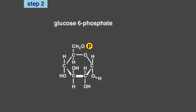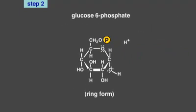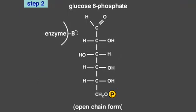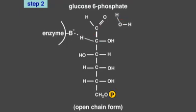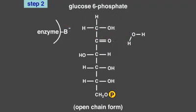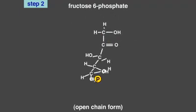In the second step of glycolysis, the enzyme phosphoglucose isomerase catalyzes the opening of the ring form of glucose-6-phosphate to the open chain form. The same enzyme then performs a reversible reaction in which the carbonyl group of glucose-6-phosphate changes position from the first carbon to the second carbon in the chain. This reaction involves a water molecule, which donates a hydrogen ion to the carbonyl oxygen. The hydrogen ion is then retrieved from the hydroxyl group on the second carbon, creating a new water molecule. In the process, fructose-6-phosphate is formed.